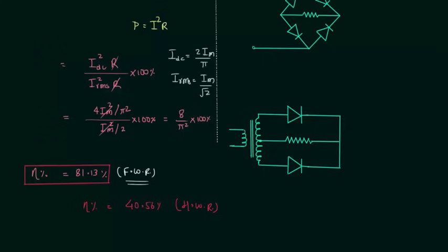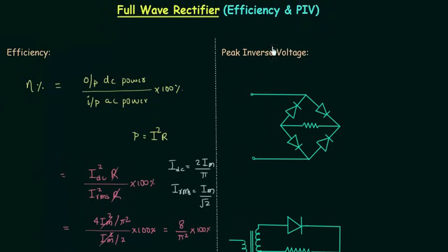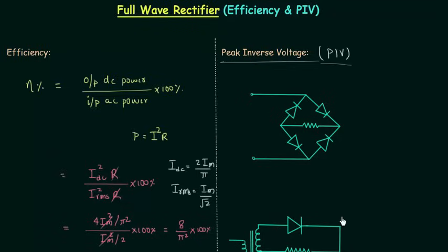Now we will calculate the peak inverse voltage for the full wave rectifier — in short it is called PIV. We have two circuits for full wave rectification: the first is the full wave bridge rectifier, and the second is the full wave center-tapped rectifier. The peak inverse voltage is different for these two circuits.